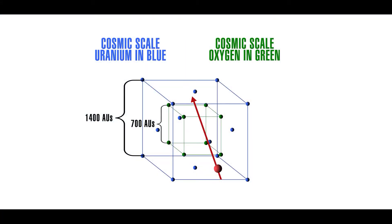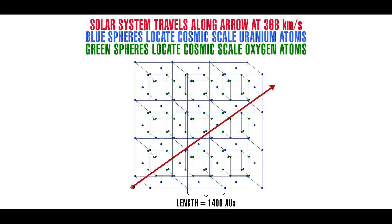The red arrow represents the direction and distance the solar system travels in one 22-year cycle. Cosmic scale crystals have areas of maximum and minimum gravitational, electric, and magnetic potential that the solar system periodically encounters.